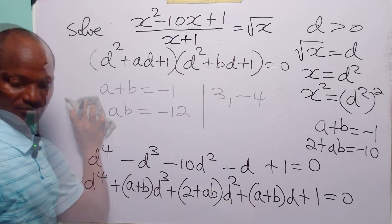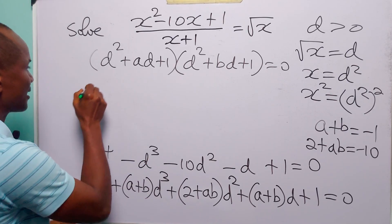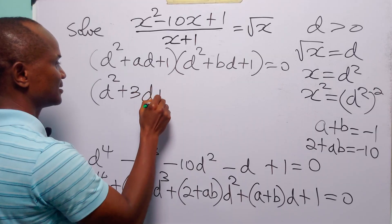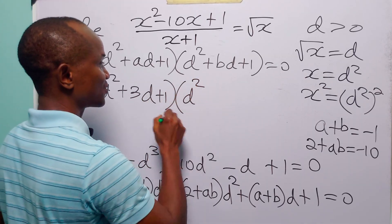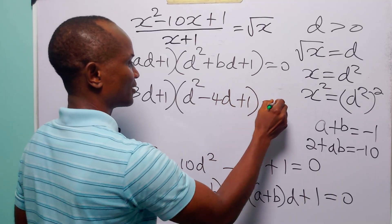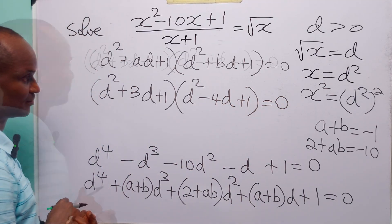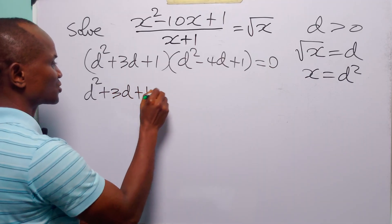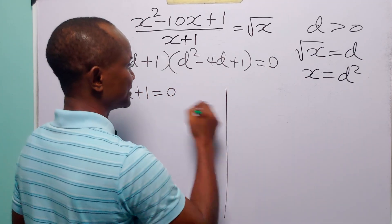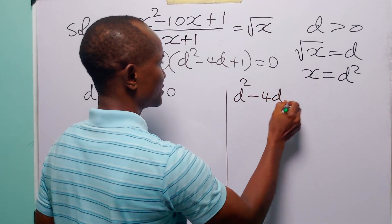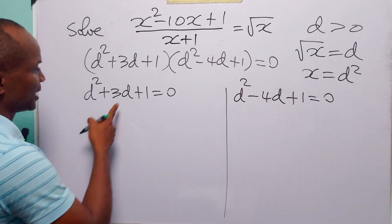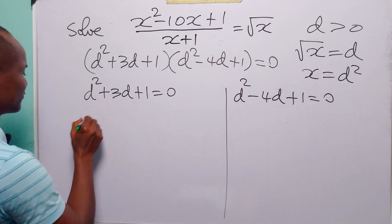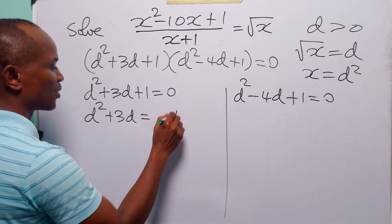So that means the factors of this quartic equation are d squared plus 3d plus 1 and d squared minus 4d plus 1, each equal to zero. From here, we have that either d squared plus 3d plus 1 equals 0. We cannot solve this quadratic equation by factorization, so let us solve by completing the square. We have d squared plus 3d is equal to minus 1.